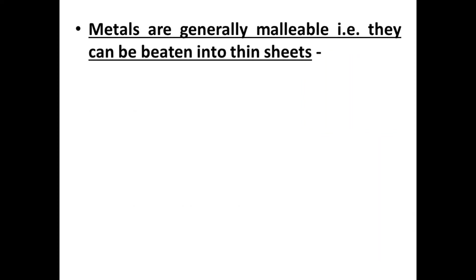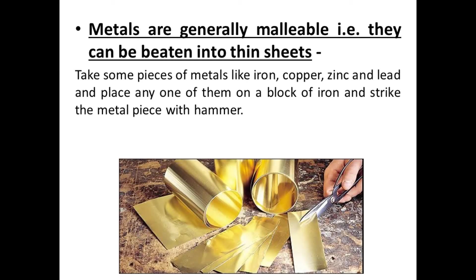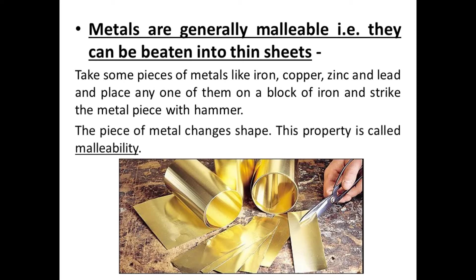Next property is malleability. Metals are generally malleable, meaning they can be beaten into thin sheets. We can take pieces of metals like iron, copper, zinc, and lead, place them on a block of iron, and strike with a hammer — the piece of metal changes its shape. This property is called malleability.